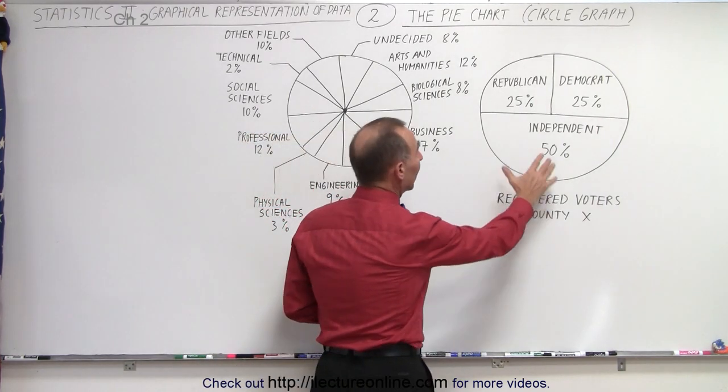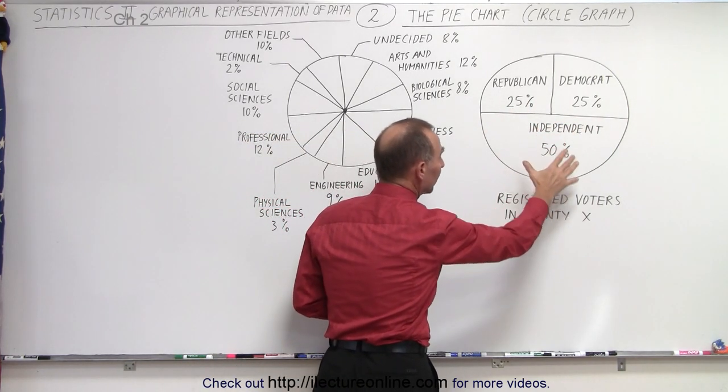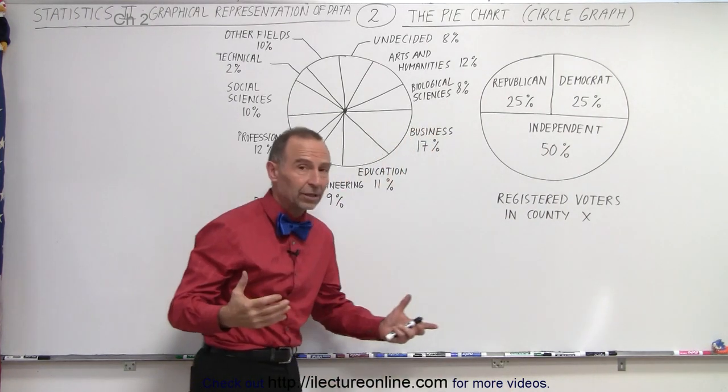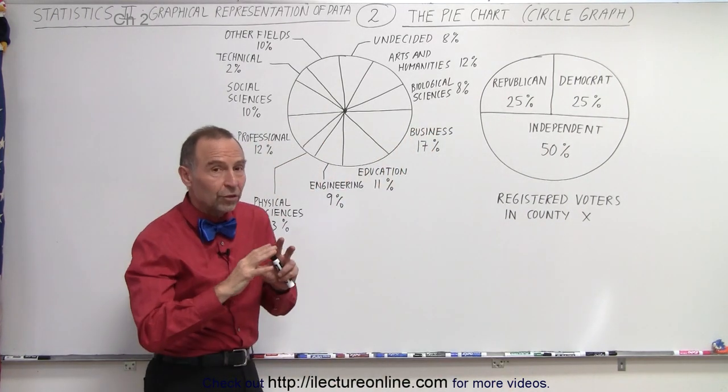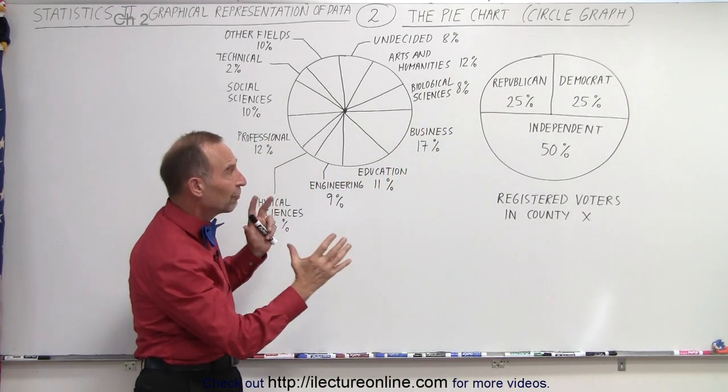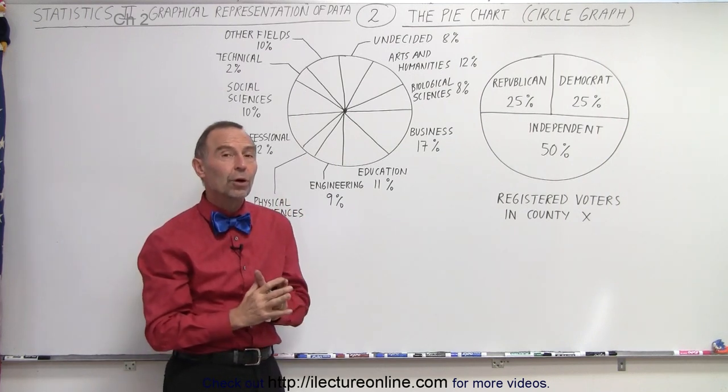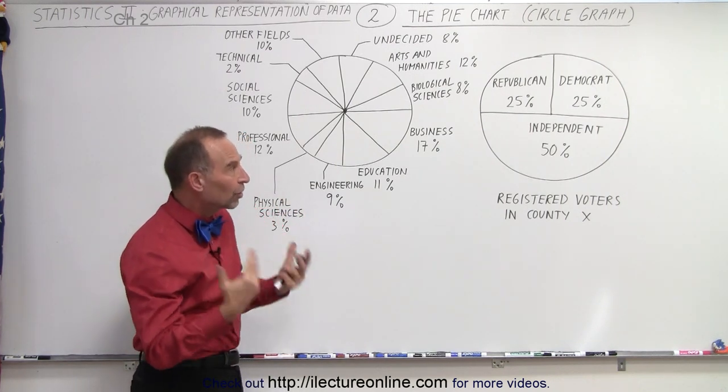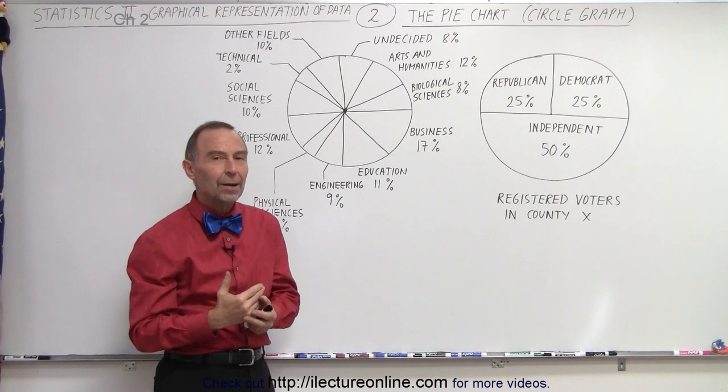For example, here we only have Republicans, Democrats, or Independents registered as voters in a particular county. Since there's only three data types, it gives you a very nice representative view of which one is the most common and which ones are less common.